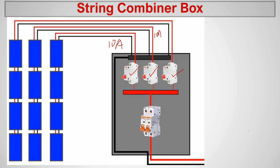Another 10 amperes come from the third string. We have circuit breakers in each string to protect each string — we don't want more than 10 amperes coming from any particular string. Then we have another circuit breaker which combines all three and makes it 30 amperes total. This 30-ampere output goes to the inverter.